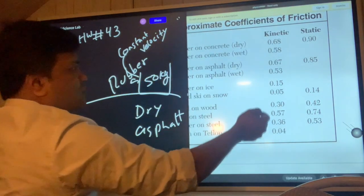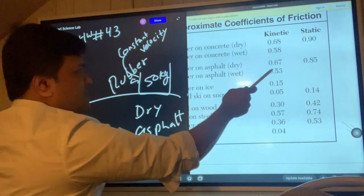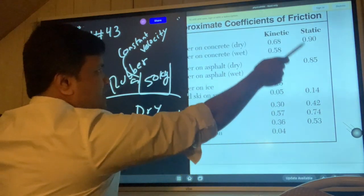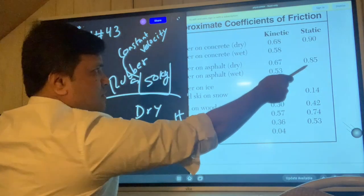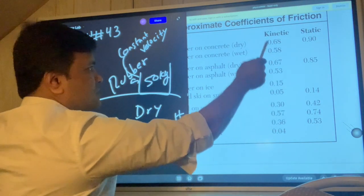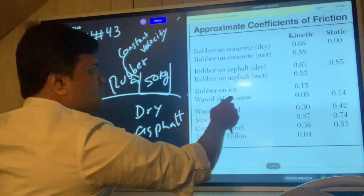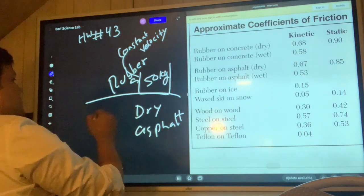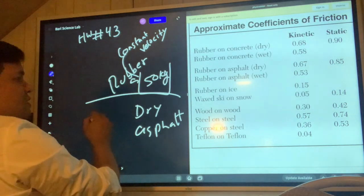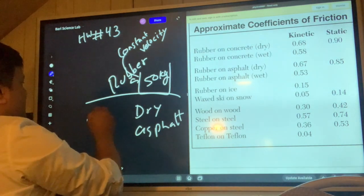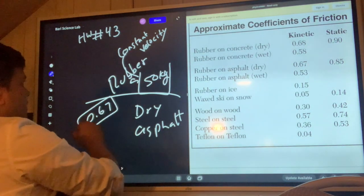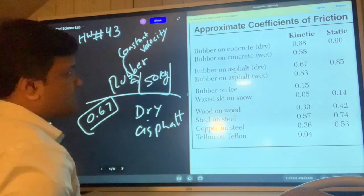So we're not going to choose the static one, which is when the box is not moving. But constant velocity means the box is moving, so we have to choose 0.67. The coefficient of friction is 0.67 for rubber on asphalt.